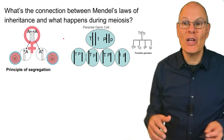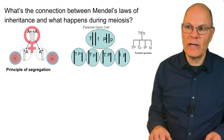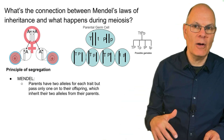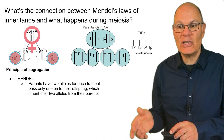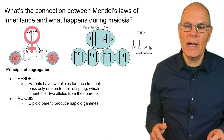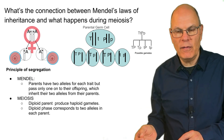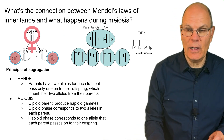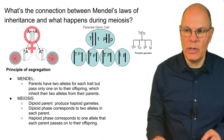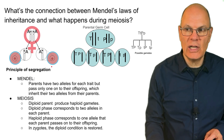What's the connection between Mendel's laws of inheritance and meiosis? Mendel's principle of segregation says that parents have two alleles for each trait but pass on only one to their offspring, who inherit their two alleles from two separate parents. In meiosis, a diploid parent produces haploid gametes: the diploid phase corresponds to the two alleles in each parent, and the haploid phase corresponds to the one allele passed on to offspring. In zygotes, that diploid condition is restored.